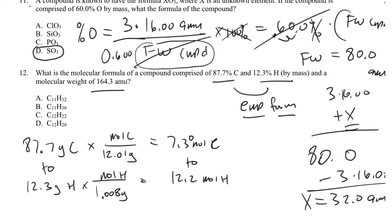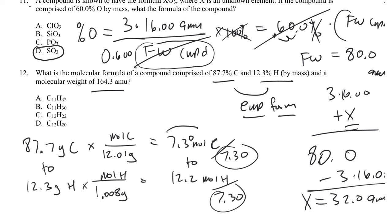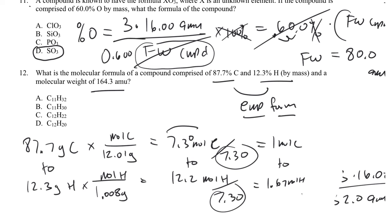We can't round to C7H12 — these aren't close enough to round. So I need to find the ratio of carbon to hydrogen. The smallest value is 7.30, so I divide both by that number to keep the ratio intact. This gives me 1 mole of carbon in ratio to 12.2 divided by 7.30, which is 1.67. Not whole numbers, but we're getting there.